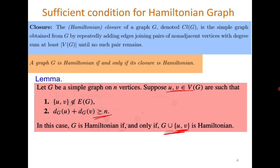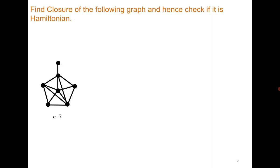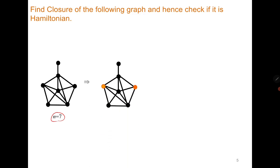First we will see how to find the closure, what it means, and then we will see the proof of this result. Consider the following graph and we need to find its closure. Closure means you need to find two non-adjacent vertices, if they exist, whose degree sum is greater than or equal to 7. For example, these two orange vertices: one has degree 3 and the other has degree 4, so their degree sum is 7, and therefore you make them adjacent to find its closure.